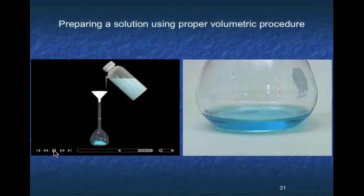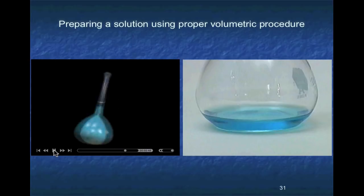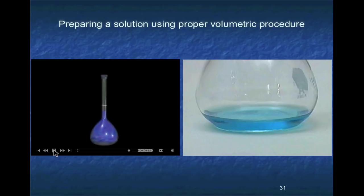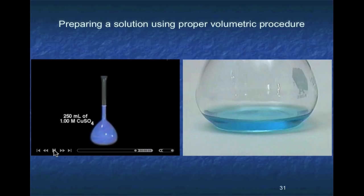Next, transfer the copper sulfate completely to a 250 milliliter volumetric flask. Water is added and the flask swirls to dissolve the solid. Finally, water is added to bring the total volume in the flask to exactly 250 milliliters.